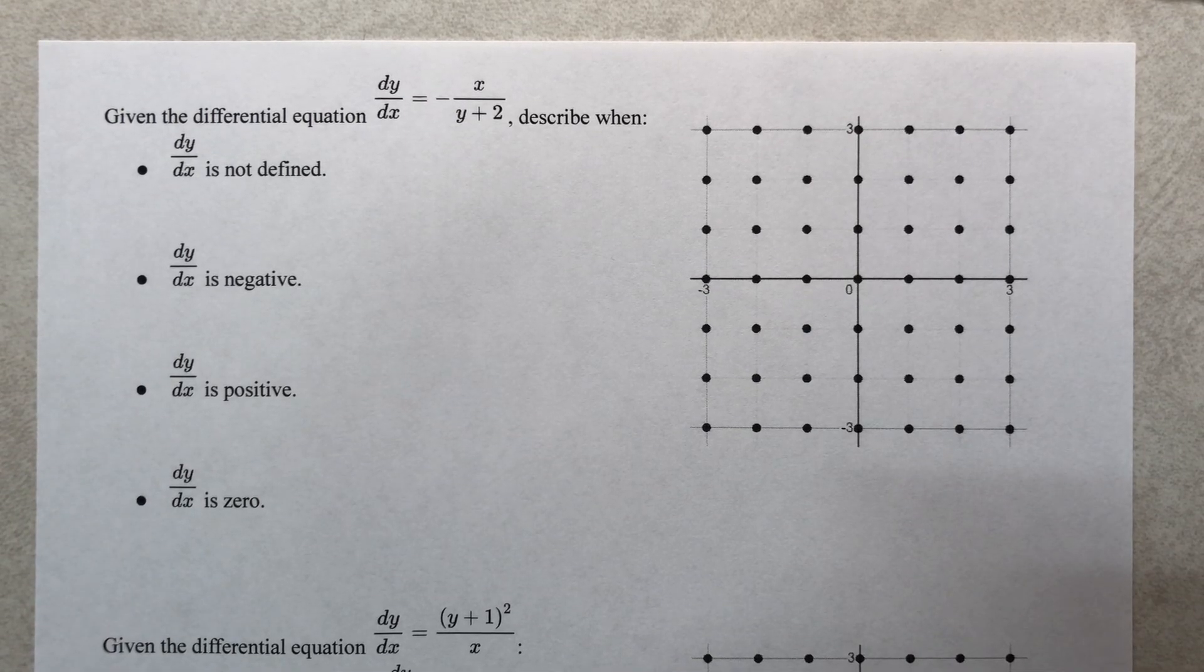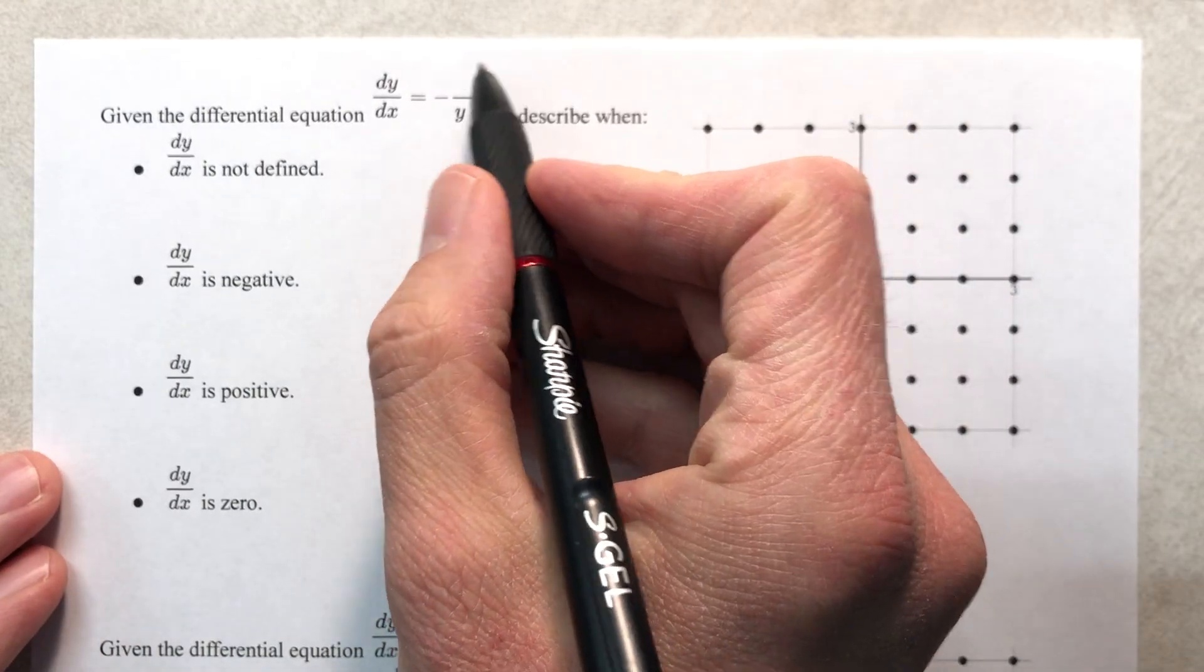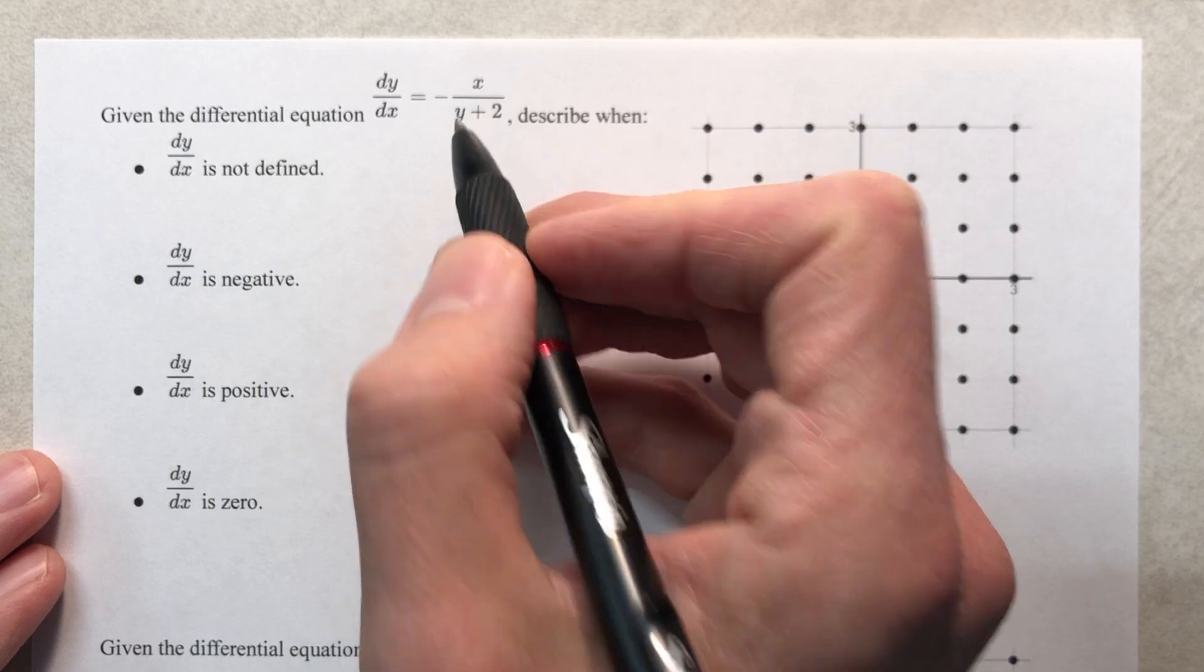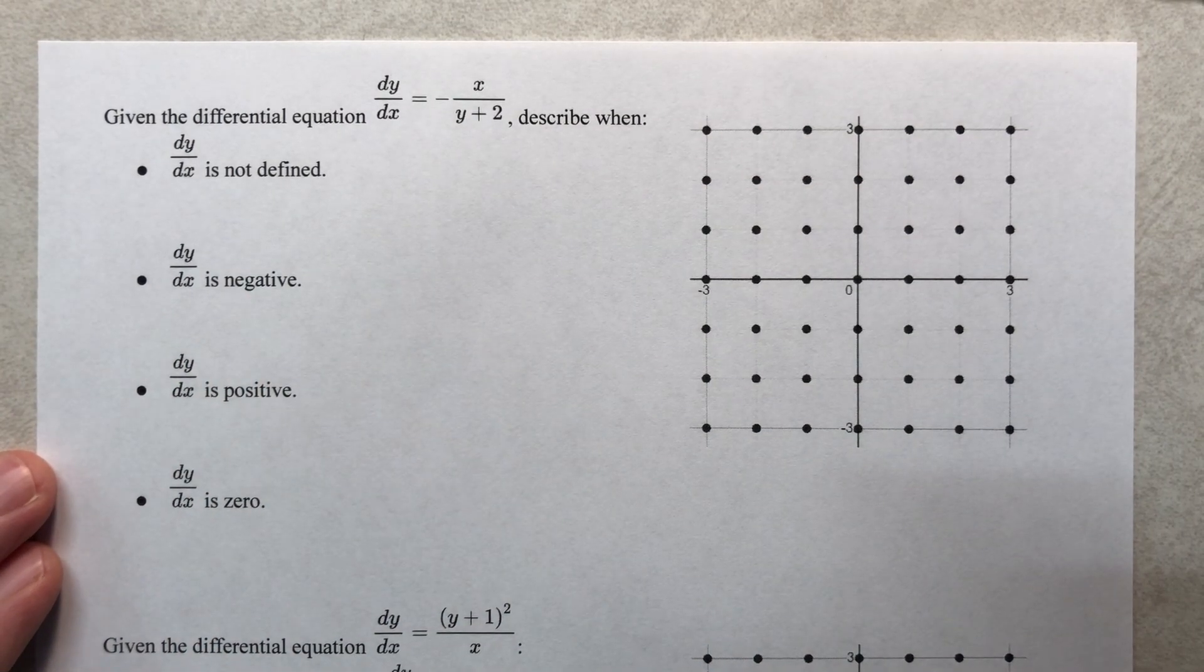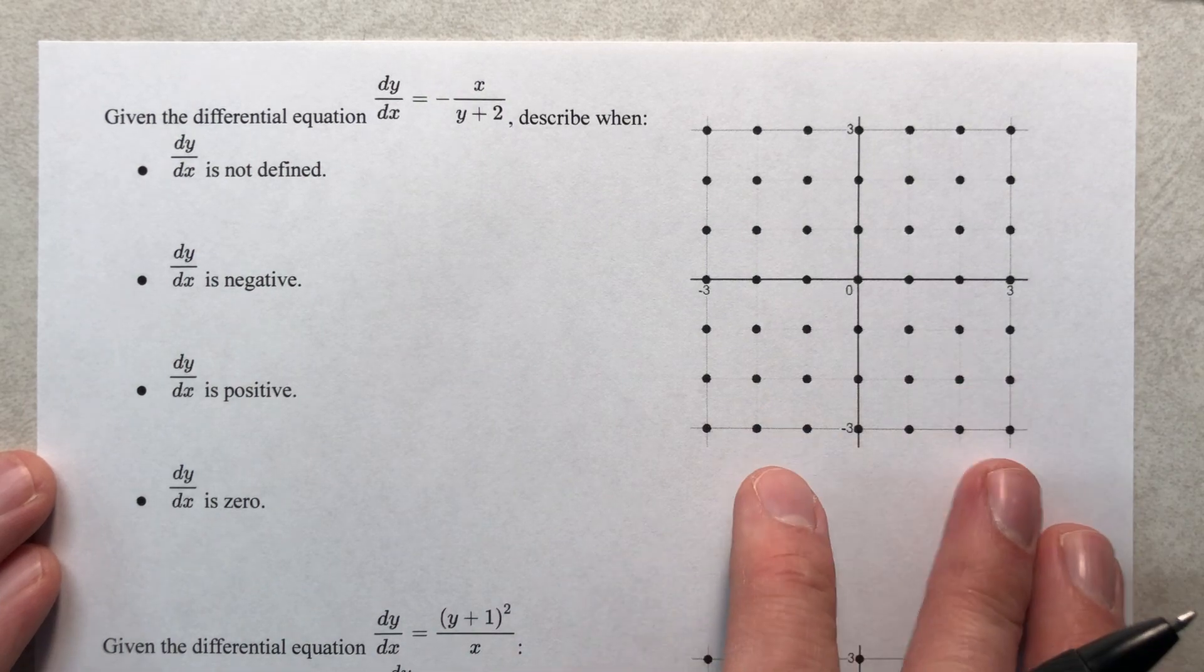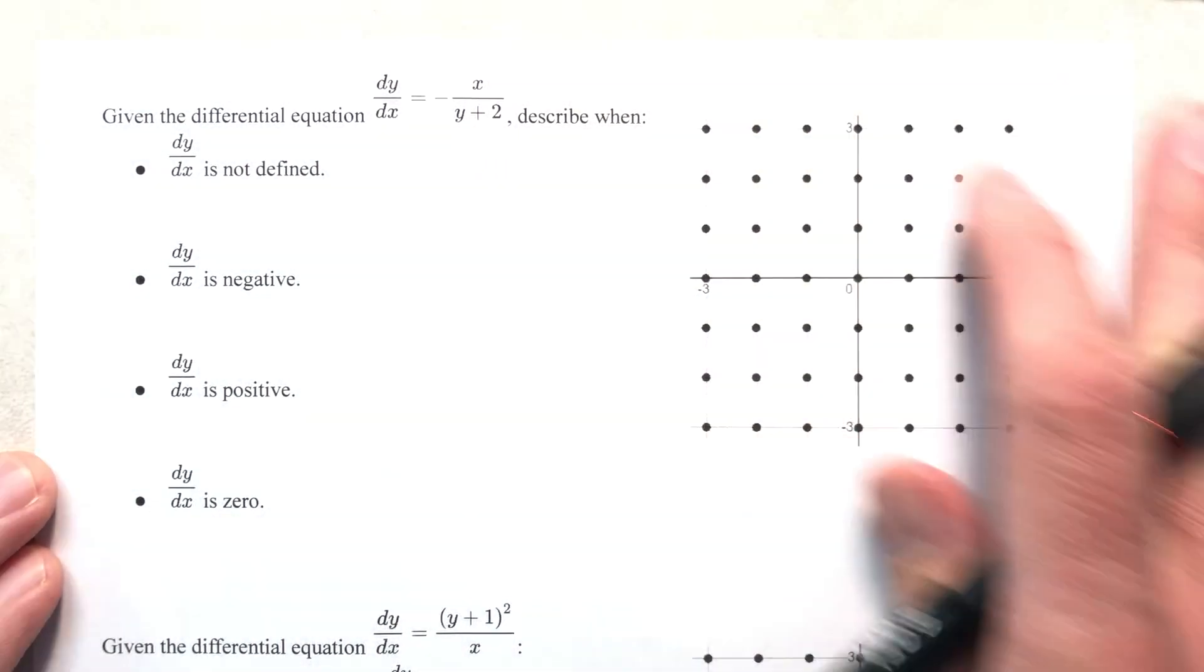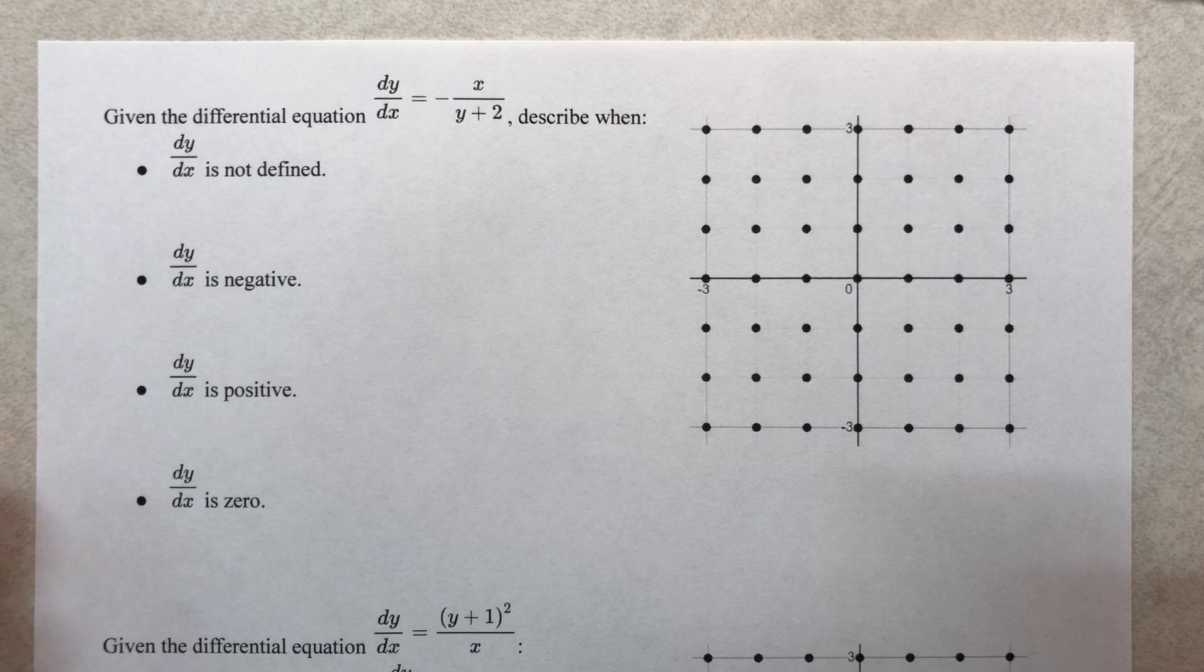Okay, in this section we are going to be looking at a differential equation and making some inferences from it just based on the structure of the slope itself. If you're looking at this and saying, I do not want to draw a slope field with 49 points, please don't.